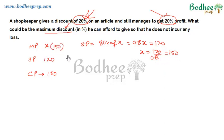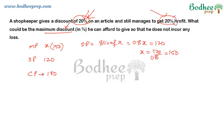So the mark price was 150. This fits — 20% of 150 is 30, and after deducting that we get the selling price of 120. With a cost price of 100, a 20% profit is indeed made. Now we need to find the maximum discount he can offer.